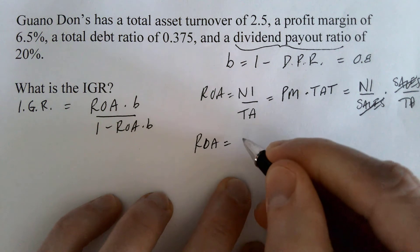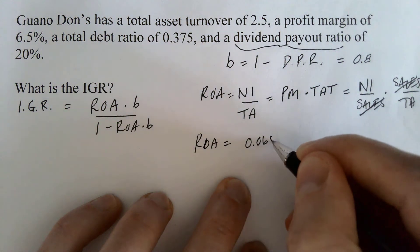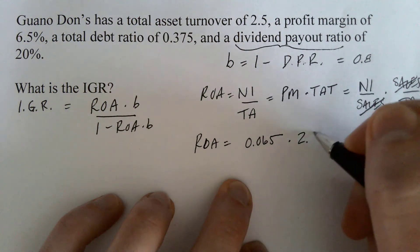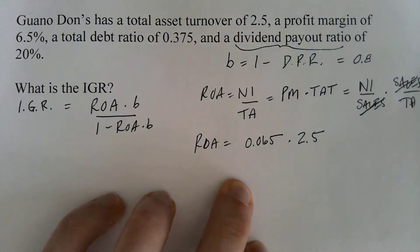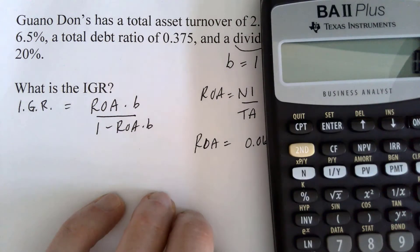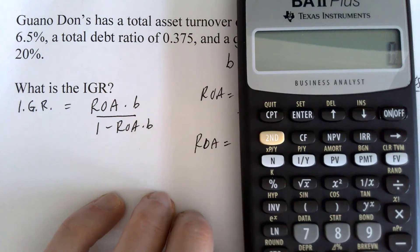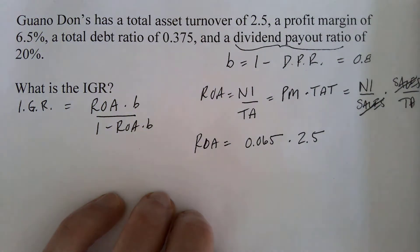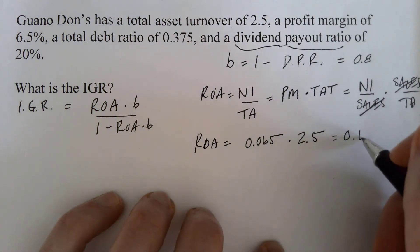Profit margin here is 0.065. We're going to do decimals. Anytime you use a proportion like this, always use the decimal in a calculation. Do not use the percentage. So 0.065 times the total asset turnover of 2.5. So we can get our calculator out. 2.5 times 0.065 equals I get 0.1625.